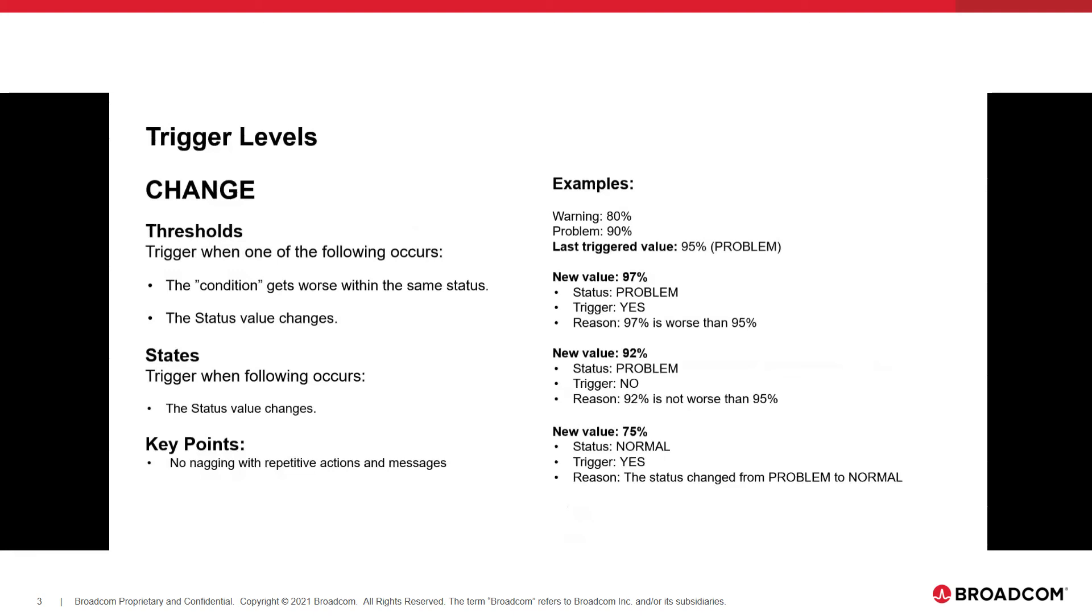Bullet two, where you have the new value of 92, we're going to compare it back to the last triggered of 95. If we do an evaluation of 92, that would get evaluated as being a problem, because it's greater than 90. Would it trigger? And the answer is no. The reason is, we previously triggered at 95, 92 is not worse, so we are not going to tell you again.